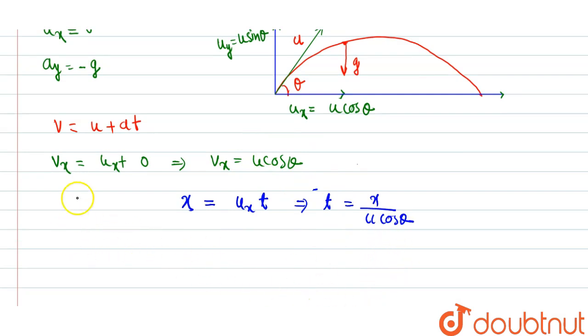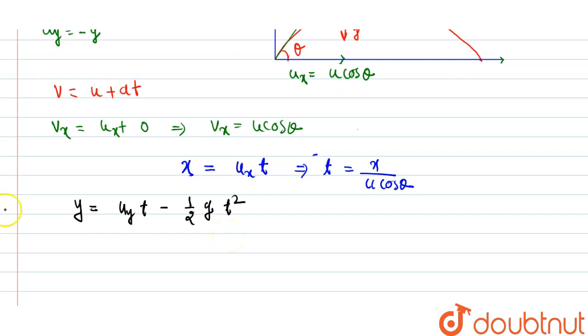Now along y direction, how much its displacement will be after time interval of t? That is uy into t minus half into g into t square. This is from third equation of motion. Now we can write y equals u sin theta, initial velocity along y direction, into time t.